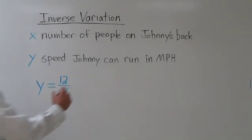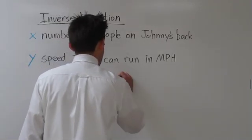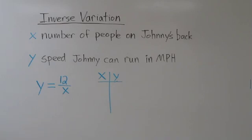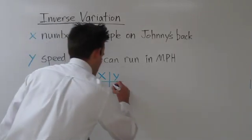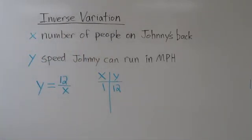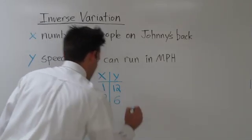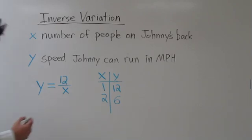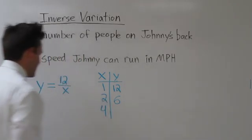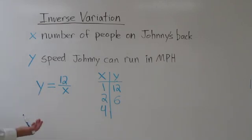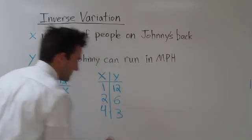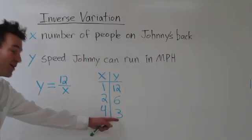So let's look at a few examples. What if there was one person on Johnny's back? Well, x is 1, so 12 divided by 1 is 12. What if there were two people on Johnny's back? 12 divided by 2 is 6. What if Johnny had 4 people on his back? 12 divided by 4 equals 3. So with 4 people on Johnny's back, he can still run 3 miles per hour.